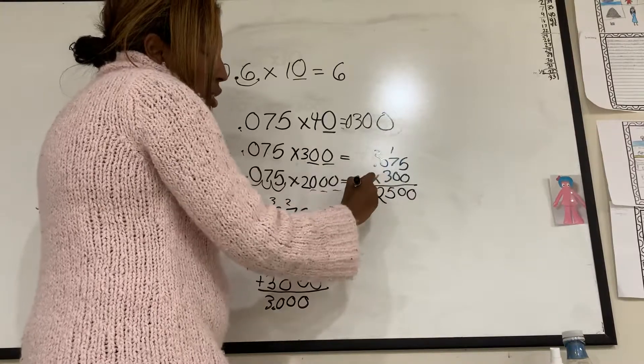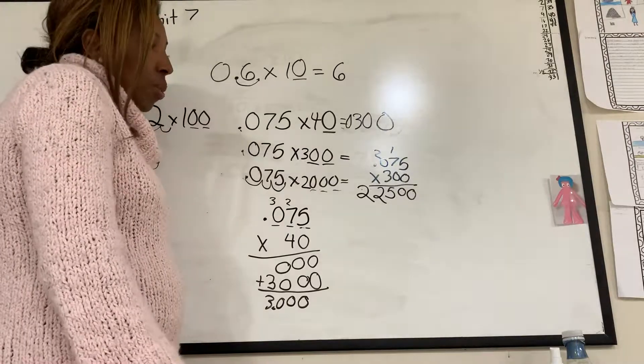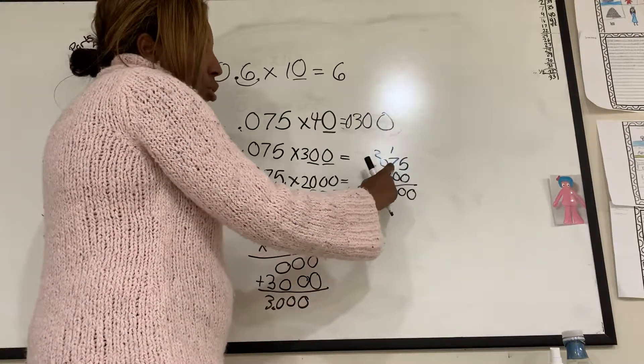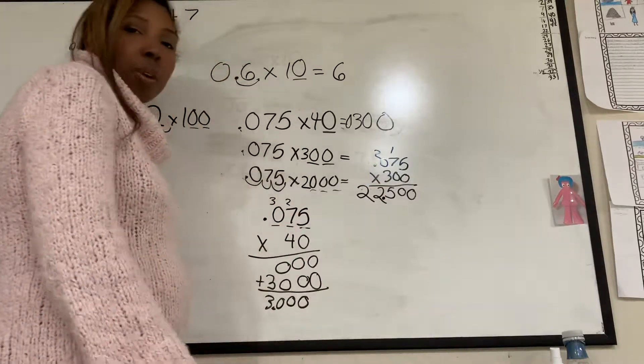3 times 7 is 21. Plus 1 is 22. Put down the 2. Carry the 2. 3 times 0 is 0. Plus 2 is 2. So you see how I did that. I just took the 0s, put them down. That's fine to do. Now I'm going to count. I have 1, 2, 3 numbers after the decimal. So I'm going to have to go 1, 2, 3 backwards.